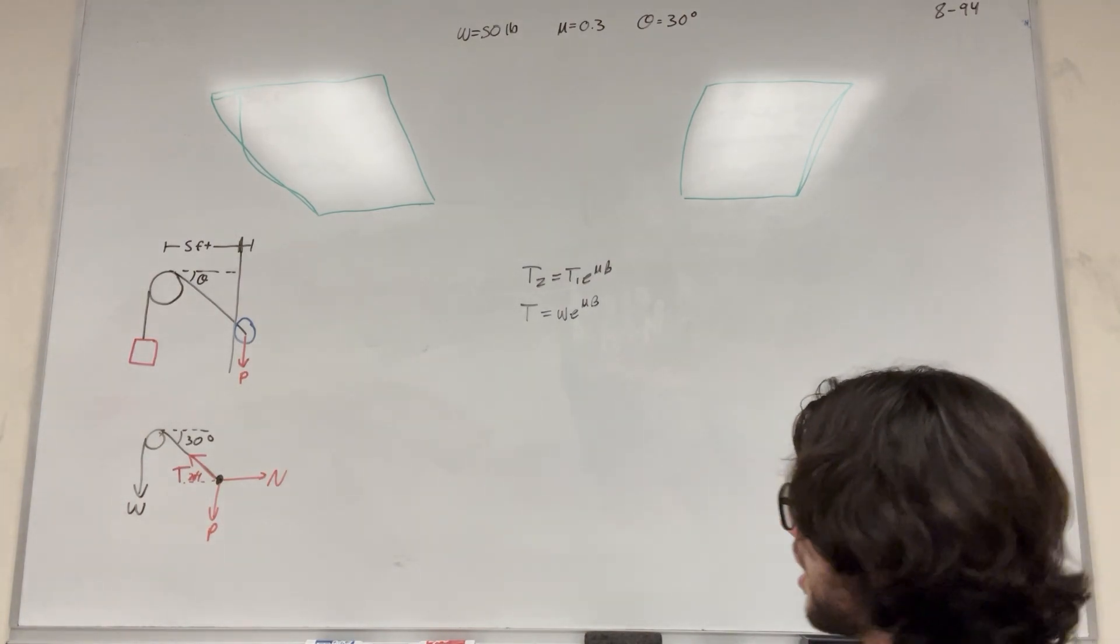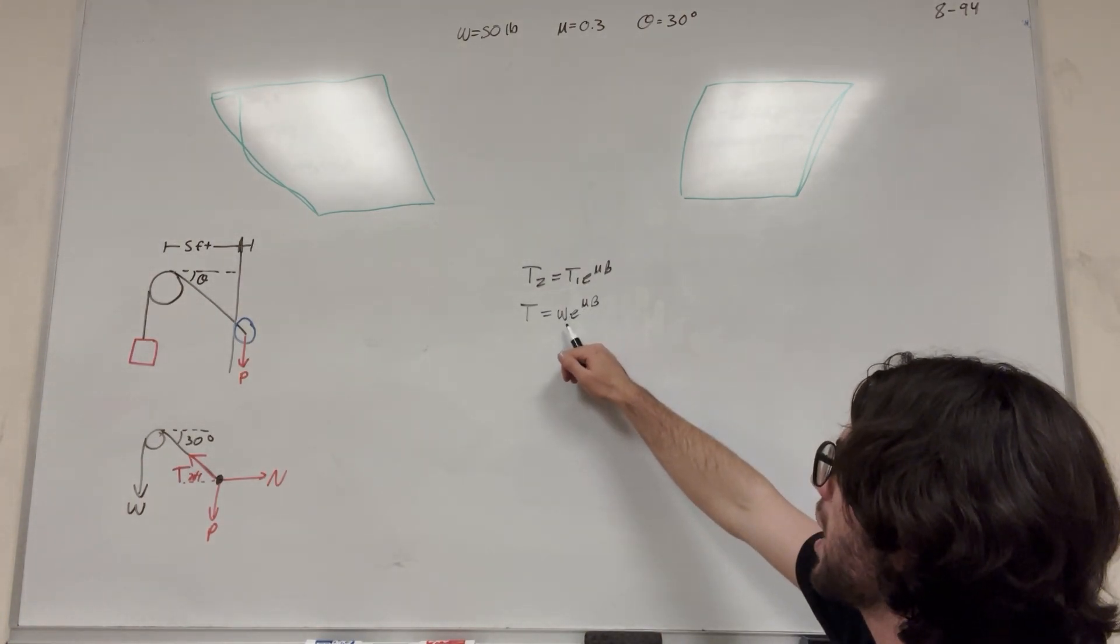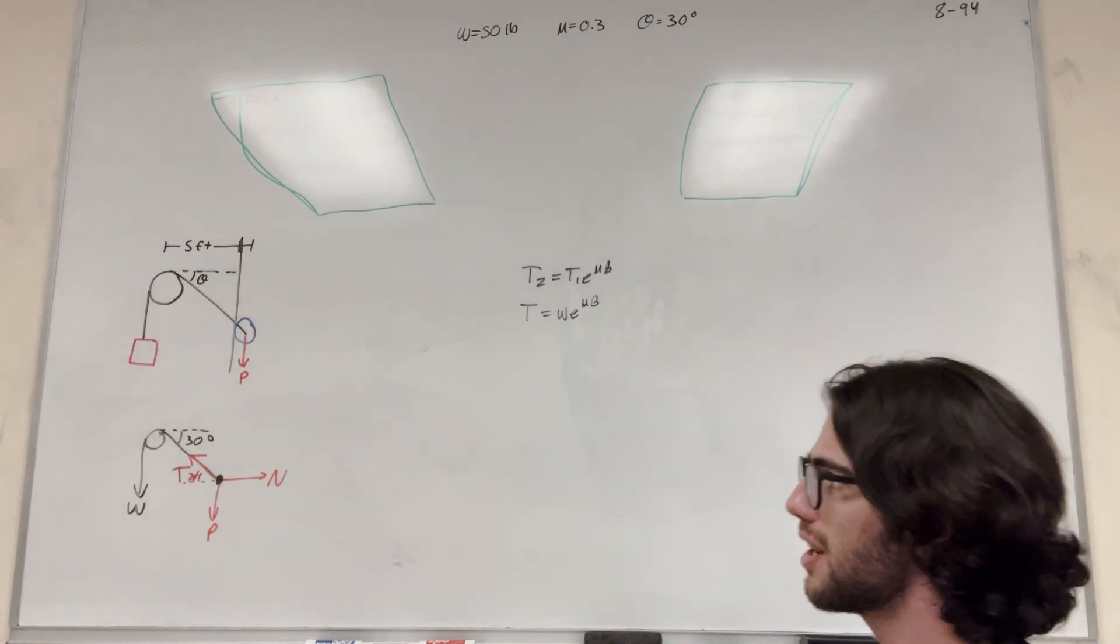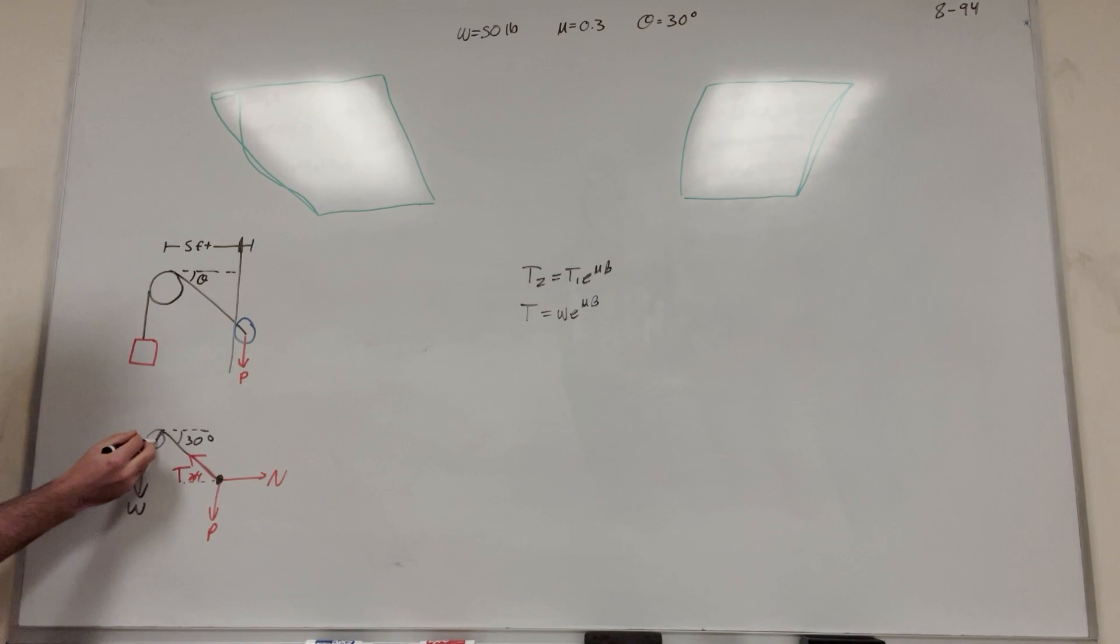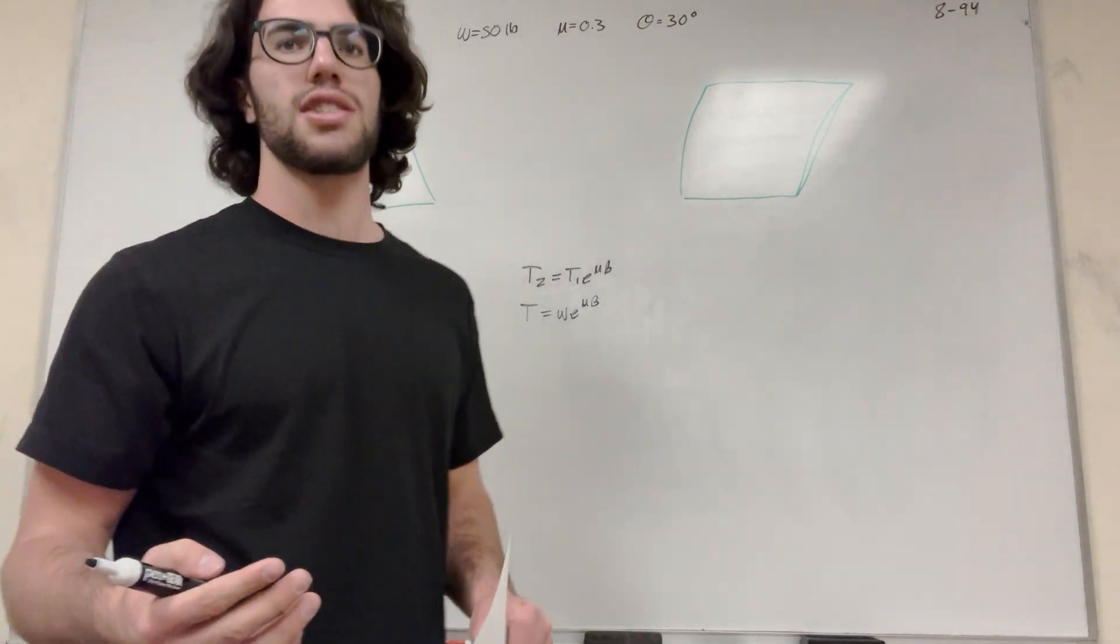So the coefficient of static friction we know, the weight we know. So what is beta? So beta is going to be the amount of radians that it covers here, basically. So it's going to be this angle. So it's like 90 degrees plus 30 degrees is how far it goes until the string leaves.